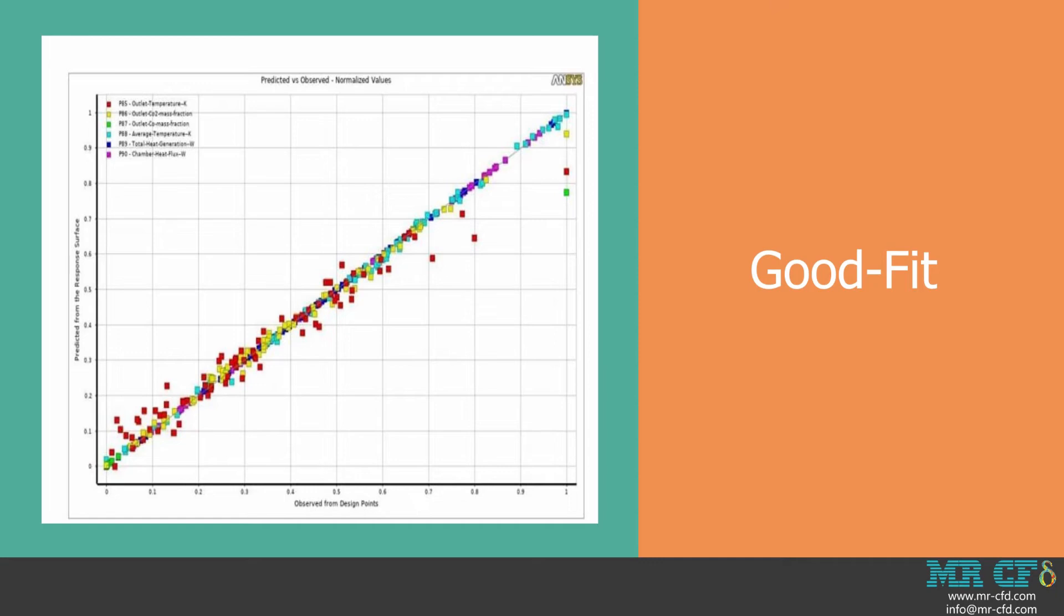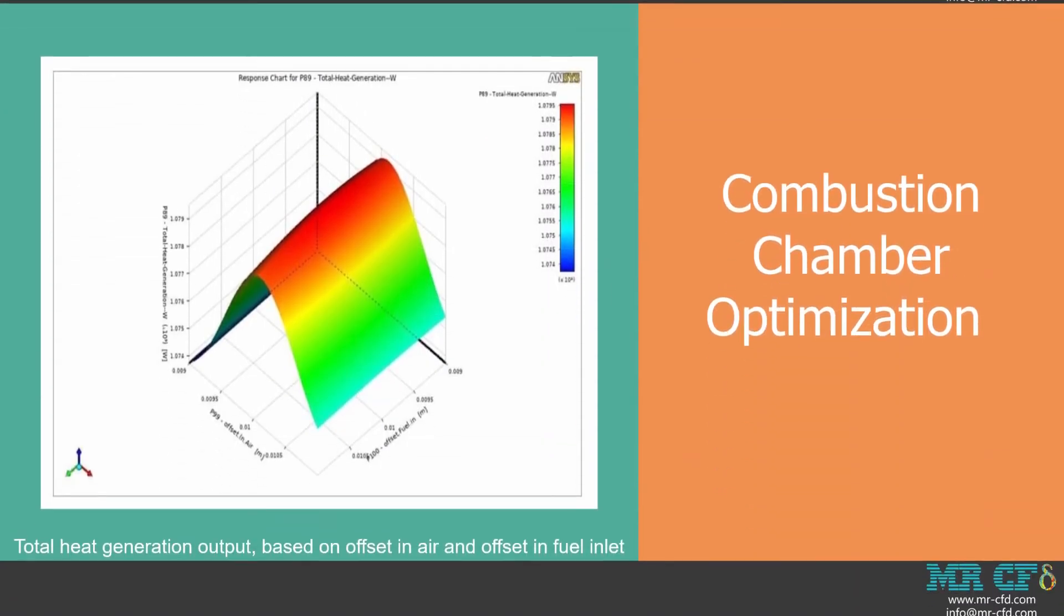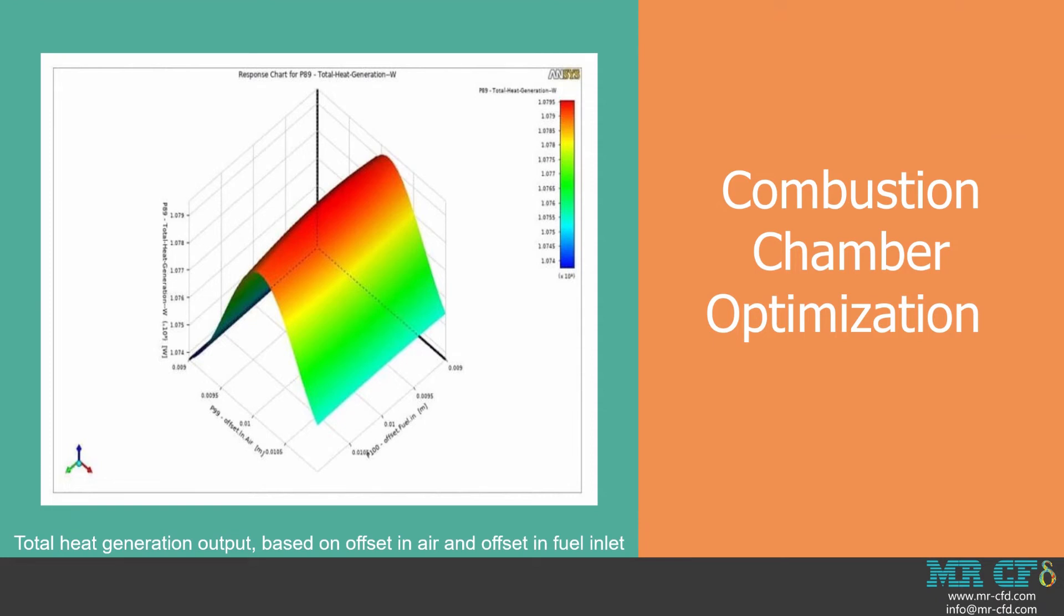As can be seen in the goodness of fit graph, there is a good agreement between the predicted values or predicted functions and the points which have been simulated. Therefore, you can trust the obtained data to give you the optimal values for each output parameter based on the inputs. You can extract many different three-dimensional surfaces to better view the results and understand the mutual effects of each input parameter over the output. You can see the relation between targets and input parameters for the combustion chamber optimization study.